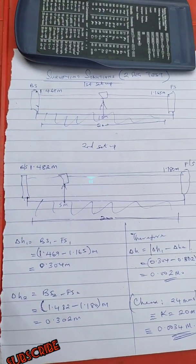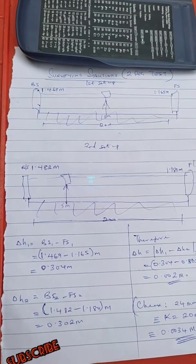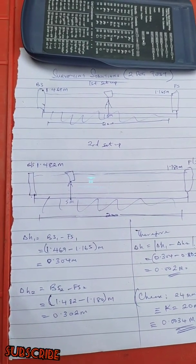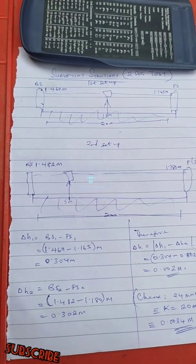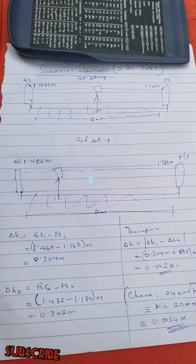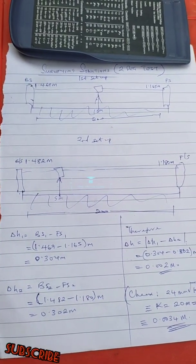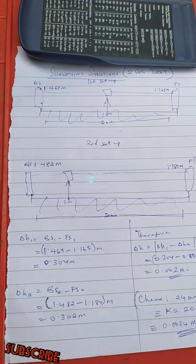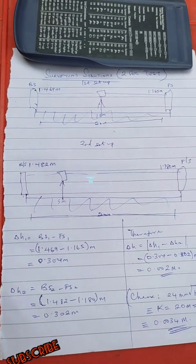On the fifth meter, we have 1.482 as the backsight, and then we have 1.180 as the foresight.